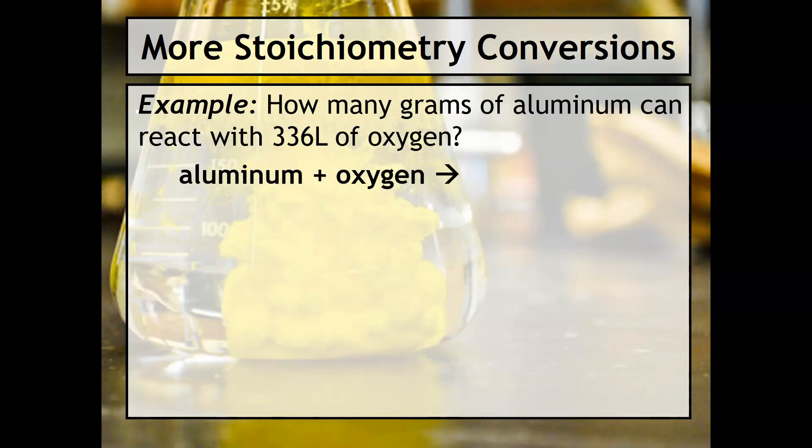Here's an example of using these conversion factors again. It says how many grams of aluminum can react with three hundred thirty six liters of oxygen? We'll have to predict the products - this is a synthesis reaction so this is aluminum oxide. We need the balanced chemical equation just like usual.